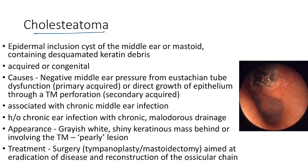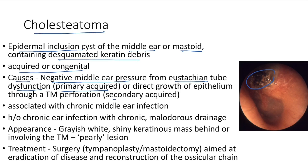Cholesteatoma is an epidermal inclusion cyst of the middle ear or mastoid containing desquamated keratin debris. It can be acquired or congenital. Primary acquired cause is negative middle ear pressure from Eustachian tube dysfunction. Secondary acquired cause is direct growth of epithelium through a tympanic membrane perforation.